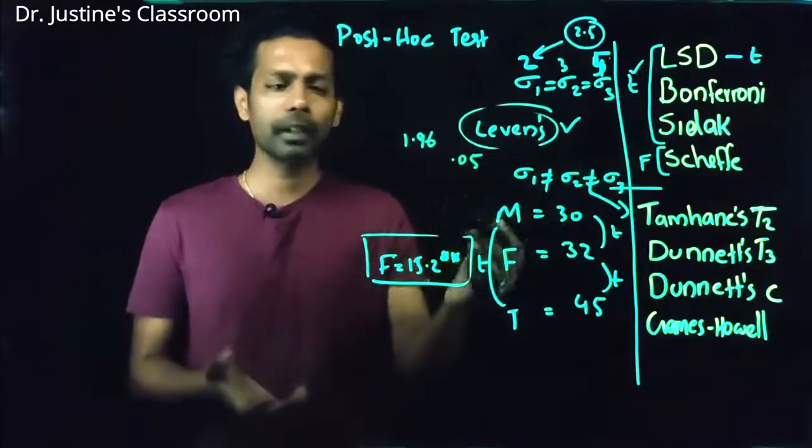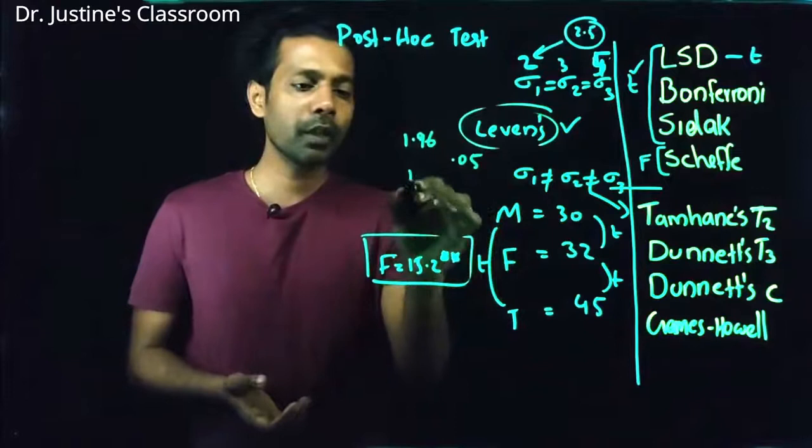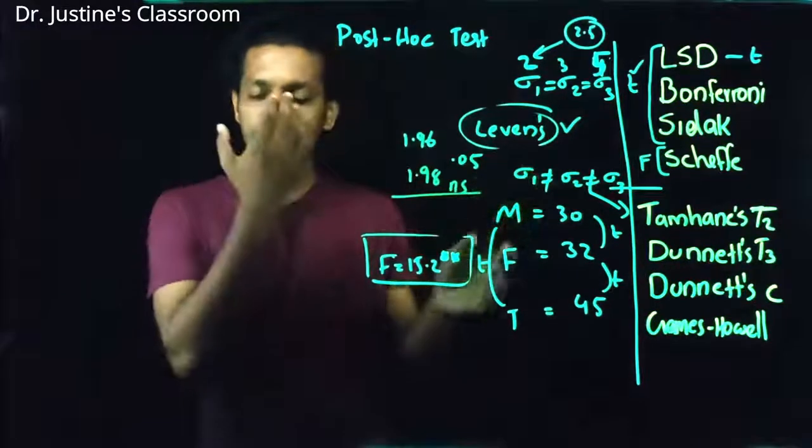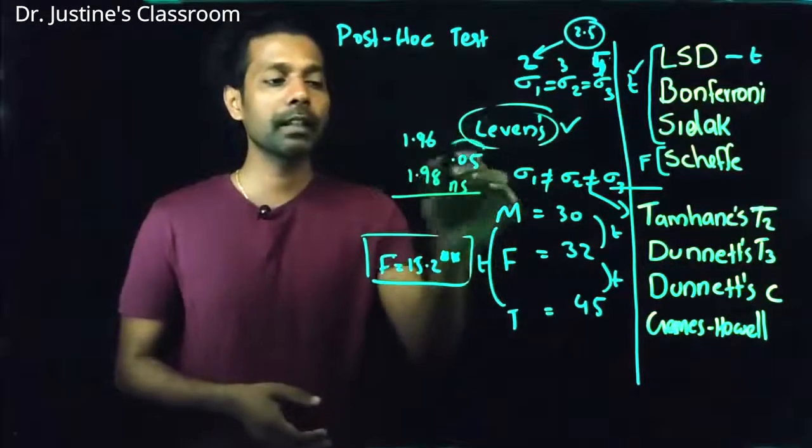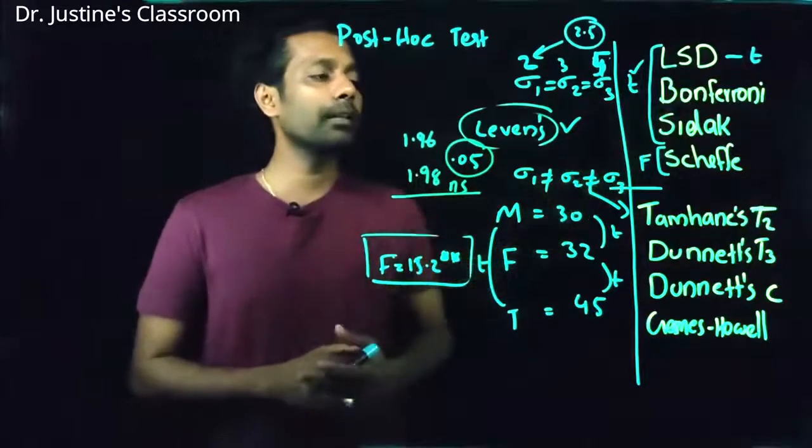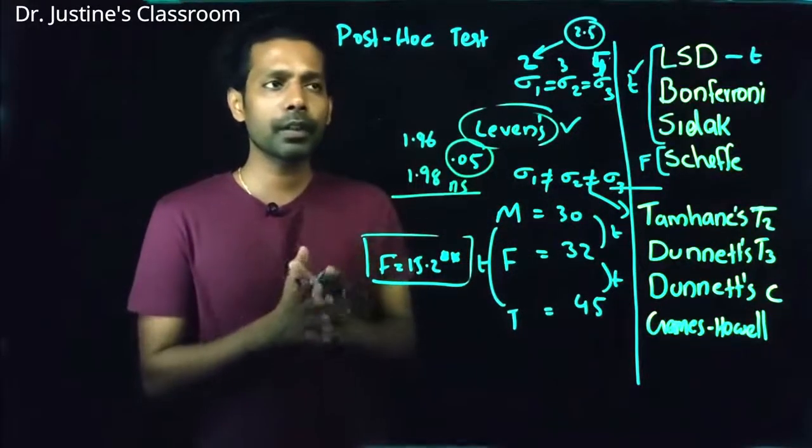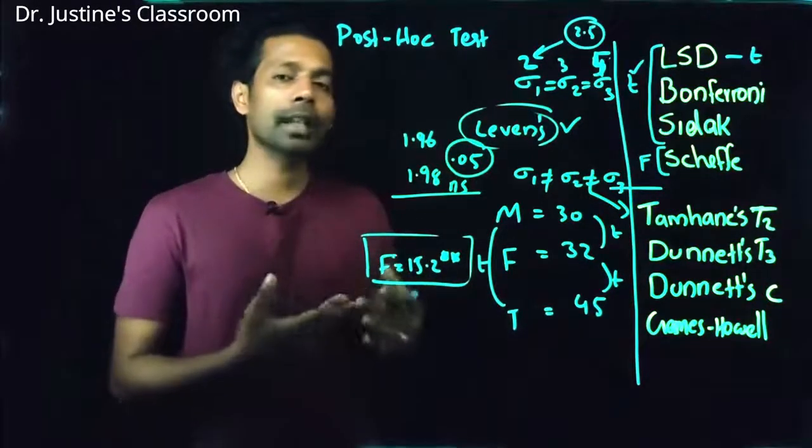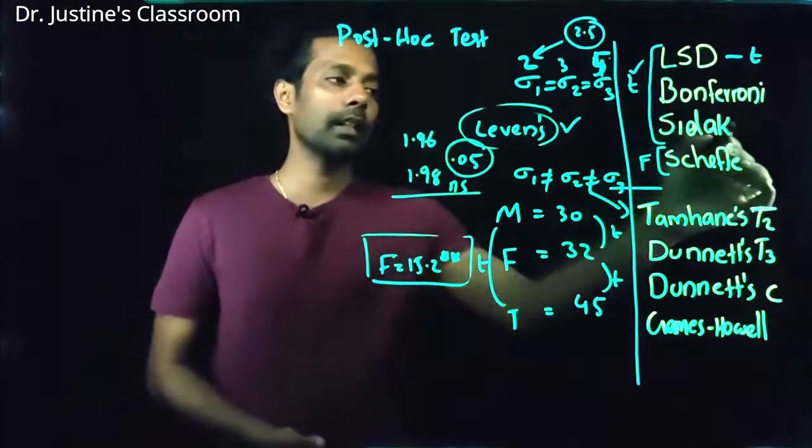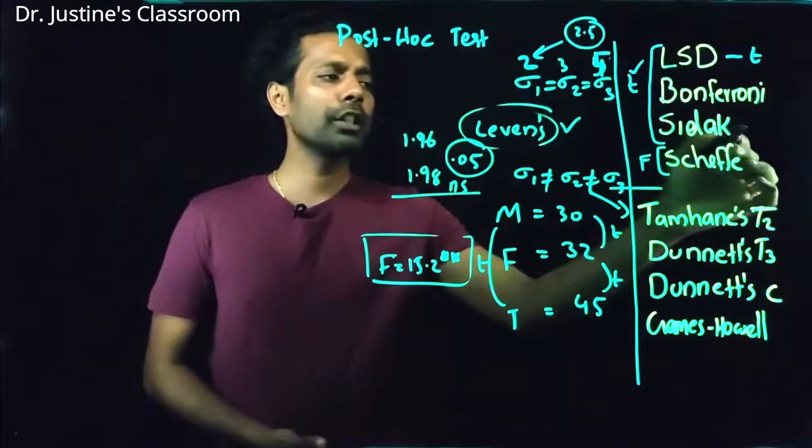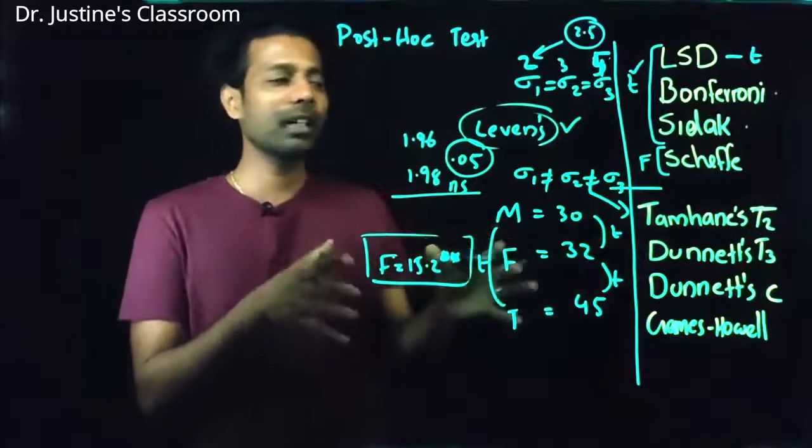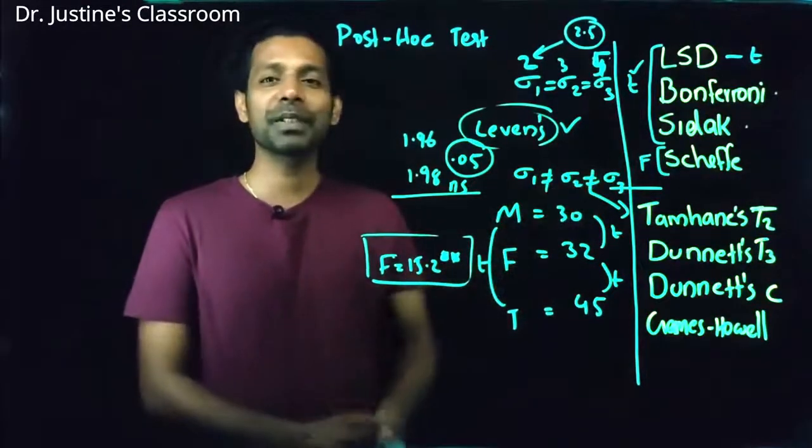But when you do a Bonferroni level analysis, even if you have 1.98, it may not be significant. You will say not significant. Some kind of correction will be done in terms of the significance level. So this is what we do in Bonferroni. And when Bonferroni is a decent kind of correction, the same procedure itself, little more extreme kind of correction is SIDAC correction. This is a little more rigid way of correcting. Bonferroni is my favorite generally.